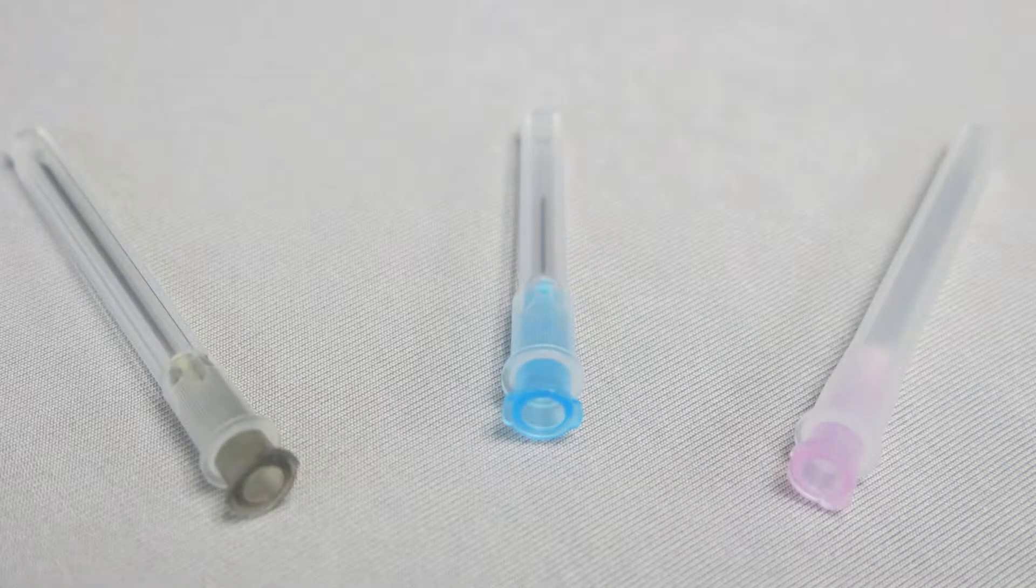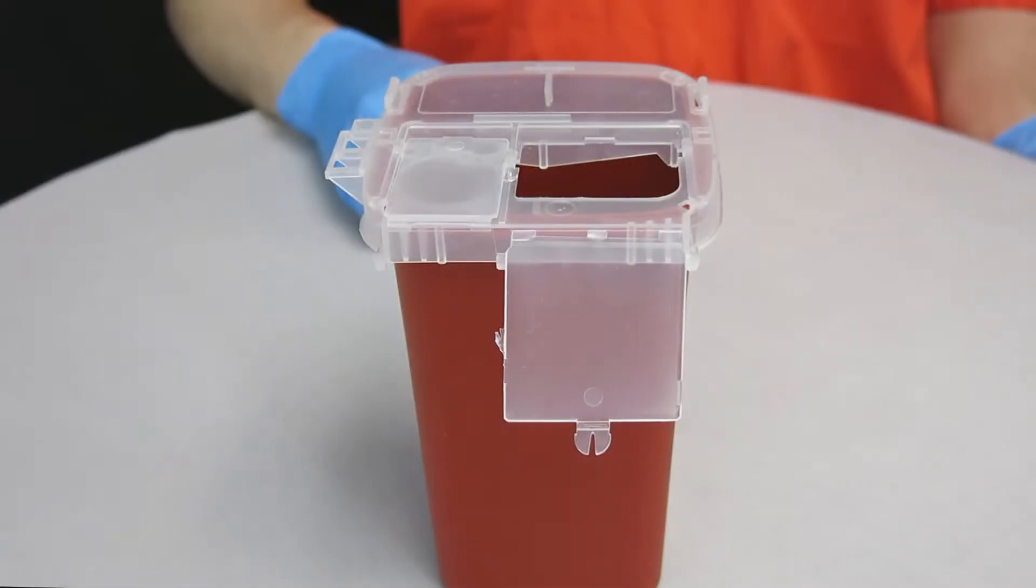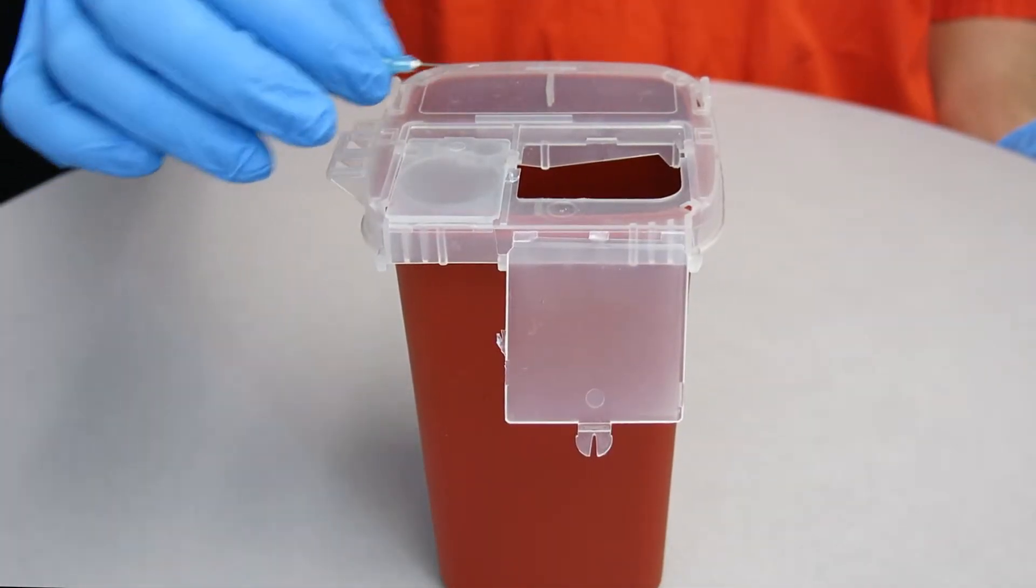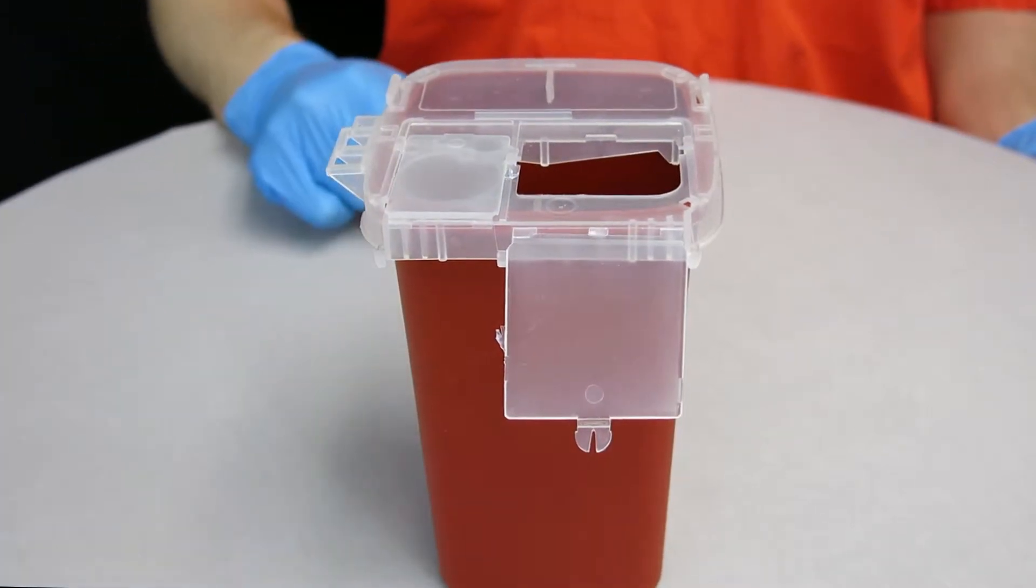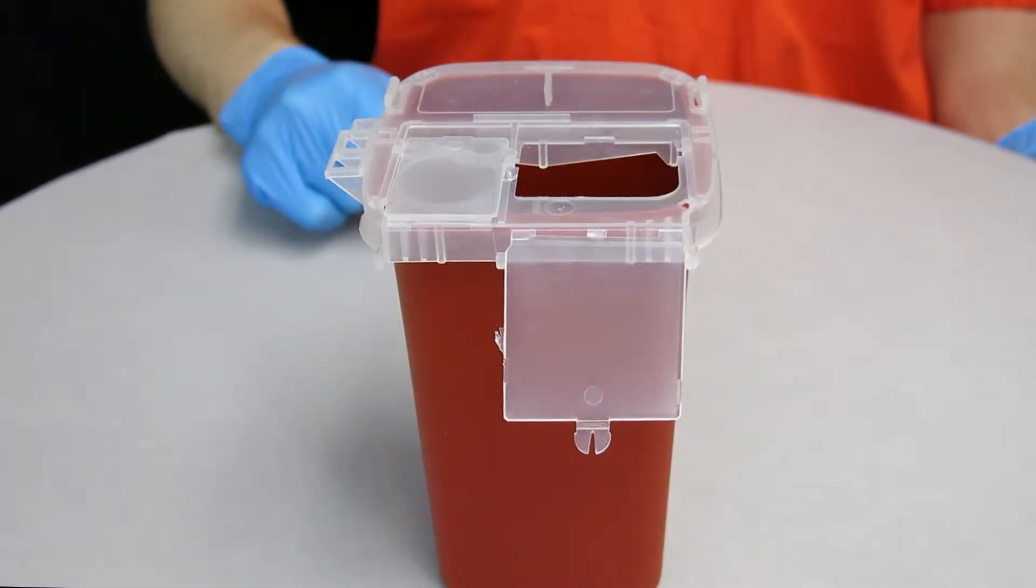Make certain that the correct size of sharp is selected for the rodent and the sampling site according to your facility's policies and protocols. Use a new sharp for each rodent or when you are unsure of the sharp's sterility. Do not recap a sharp and be sure to dispose of sharps according to your facility's policies and protocols.